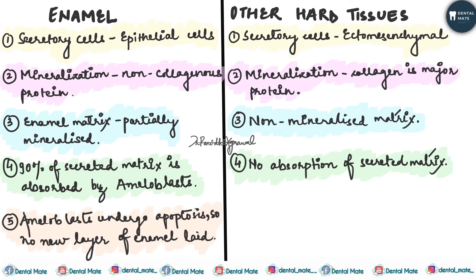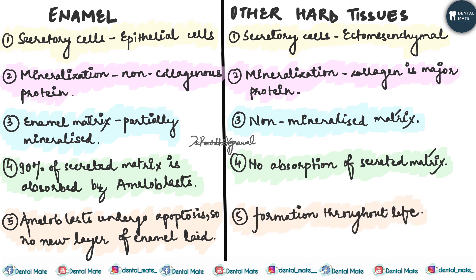The ameloblasts undergo apoptosis, so no new layer of enamel is laid once the enamel formation is completed, whereas the other hard tissues undergo formation throughout the life. So these are the 5 points of differences between enamel and other hard tissues.